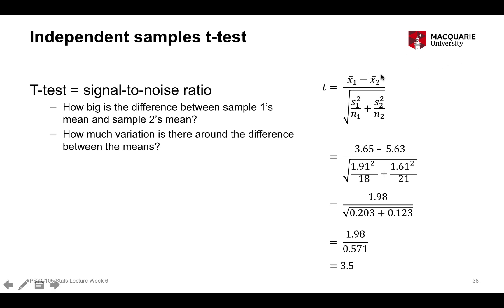You just need to ensure that x-bar 1 corresponds to the same group as the standard deviation for group 1, and x-bar 2 corresponds to the standard deviation for group 2. Plugging in the mean scores and standard deviations, we end up with a t-statistic of 3.5.